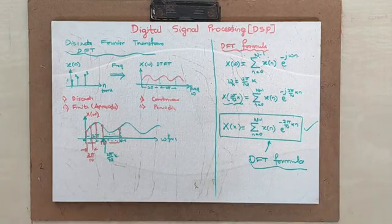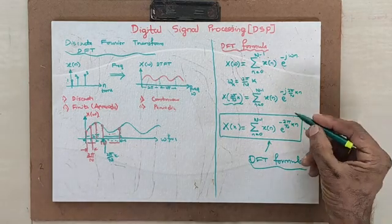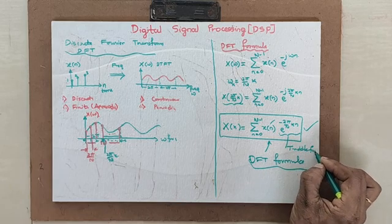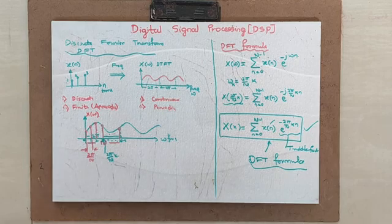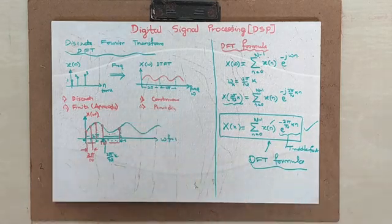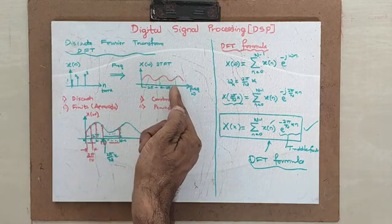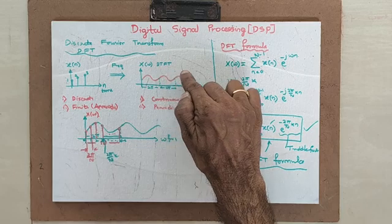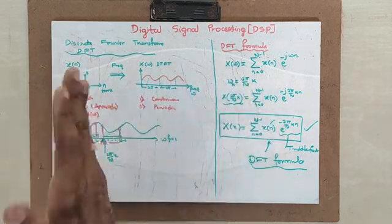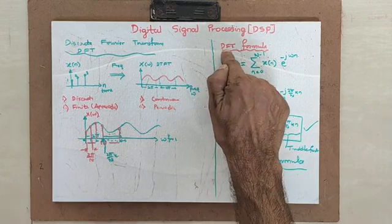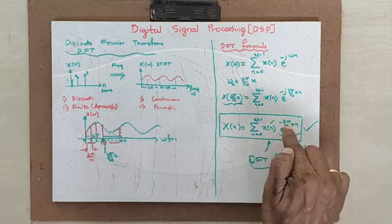This DFT formula is very fundamental and important. From today's first class through to the last, we will be dealing with this formula in different ways. Here, x(n) is the time domain signal, and the exponential term e raised to minus j·(2π/N)·k·n is called the twiddle factor — I will explain the twiddle factor in the next session. The concept is simple: the time domain signal, which is discrete, finite, and aperiodic, is taken into the frequency domain where it becomes continuous and periodic. That frequency domain signal is then sampled, and the formula for that sampled signal is the discrete Fourier transform.